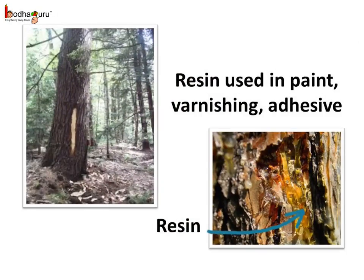The resin is used in paints, varnishes, adhesives, etc. It is obtained as a viscous liquid exuded by plants like the pine tree. Apart from these wastes, the plant roots also sometimes excrete waste materials.